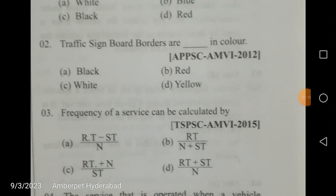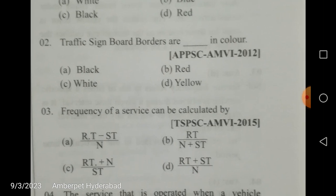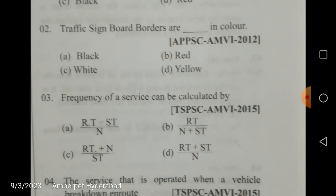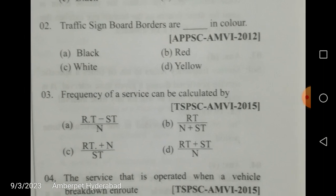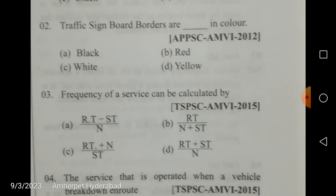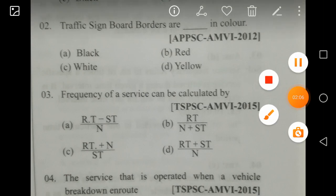Next question: traffic sign board borders are in which color — black, red, white, or yellow? Yellow traffic boards denote school signs and warning signs especially. Yellow traffic boards are placed to show sand storm areas, speed limits, and roads under construction. The reason yellow color is used is that the human eye catches yellow color from a far distance.